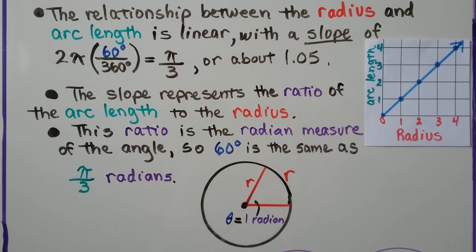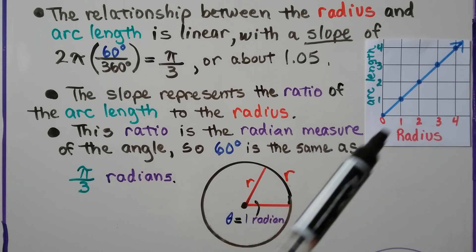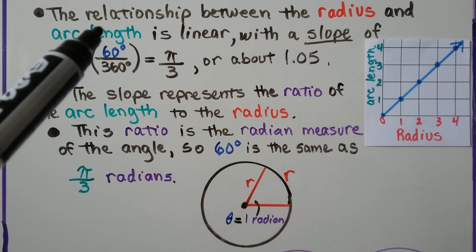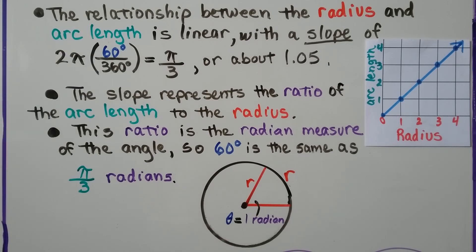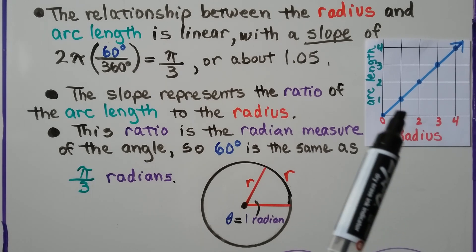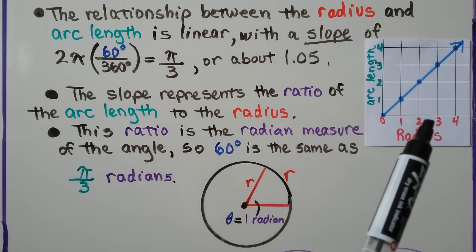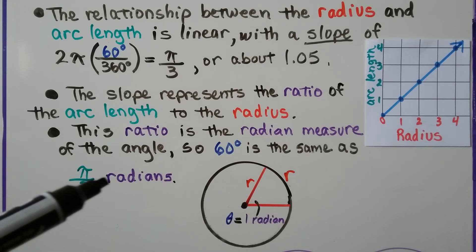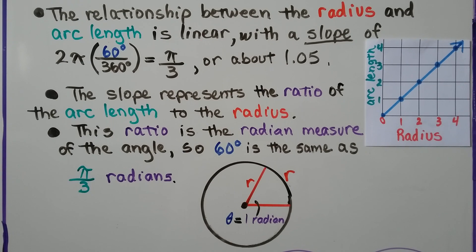The relationship between the radius and the arc length is linear, with a slope of 2π × (60° / 360°), which would be π/3, or about 1.05. The slope represents the ratio of the arc length to the radius, and this ratio is the radian measure of the angle. So 60 degrees is the same as π/3 radians.